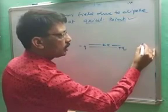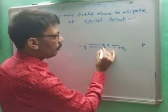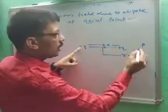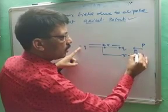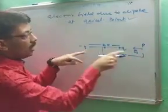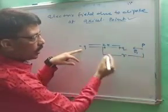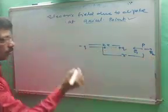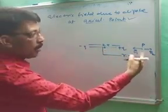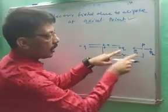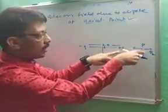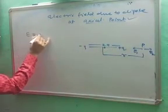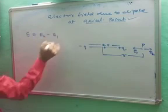Let point P be on the axial position at distance R from midpoint O. The electric field E1 at P due to minus Q points toward the negative charge. The electric field E2 at P due to plus Q points away from plus Q. Since E2 and E1 are in opposite directions and E2 is greater than E1 because plus Q is closer, the net field is E2 minus E1.